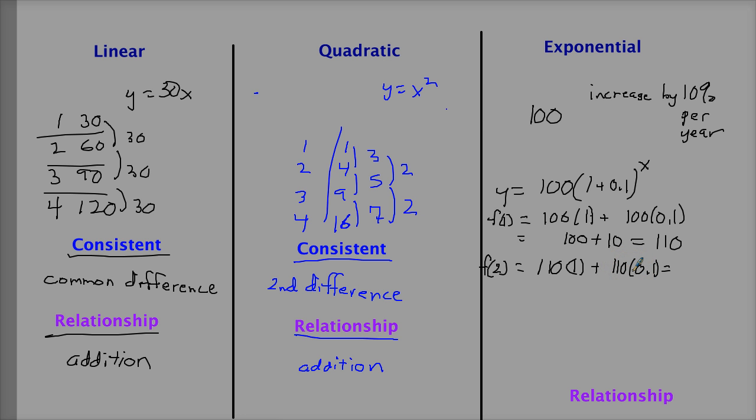110 times 0.1 is not the same thing as 100 times 0.1. It's 11. So you get 110 plus 11. That's the difference. It's not based on the consistent amount each time. The real consistency is in the relationship itself. So let's look at what that relationship is.